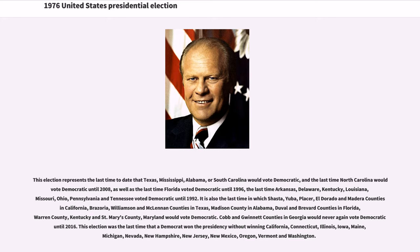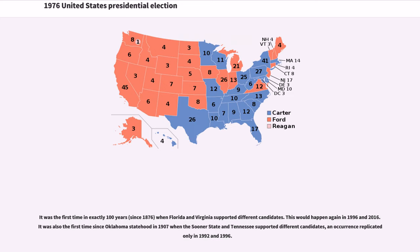This election was the last time that a Democrat won the presidency without winning California, Connecticut, Illinois, Iowa, Maine, Michigan, Nevada, New Hampshire, New Jersey, New Mexico, Oregon, Vermont, and Washington. It was the first time in exactly 100 years when Florida and Virginia supported different candidates — an occurrence that would happen again in 1996 and 2016. It was also the first time since Oklahoma statehood in 1907 when the Sooner State and Tennessee supported different candidates, an occurrence replicated only in 1992 and 1996.